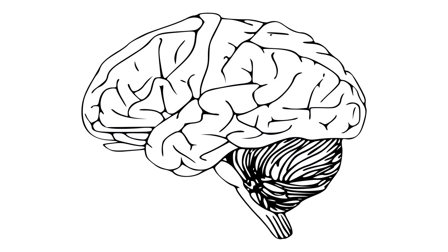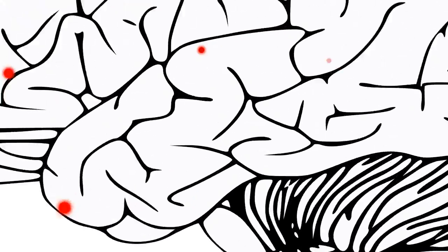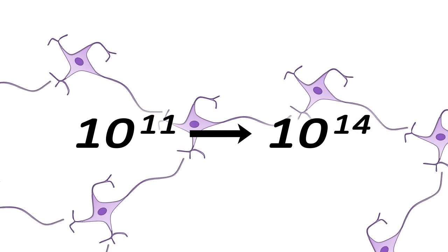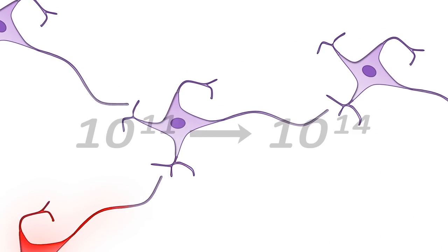Action potentials, or APs, run in circuits from one neuron to another, like holiday lights. A synapse is a junction where APs are transferred. In your body, 100 billion neurons have more than 100 trillion synapses.